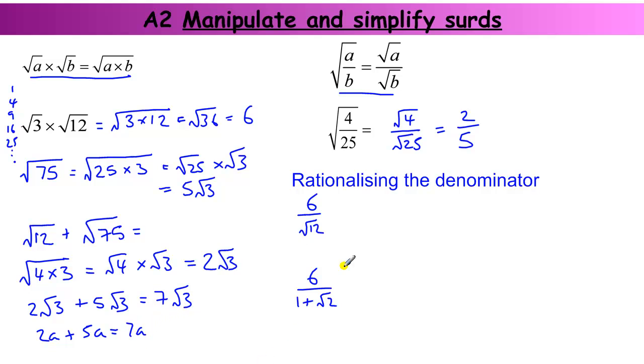Okay, now another thing we need to be able to do is rationalize the denominator. That means to turn the bottom of a fraction into a rational number, so not a square root. To do that, with a simple case like this, we just times by the surd that's on the bottom.